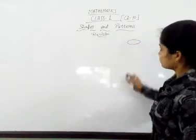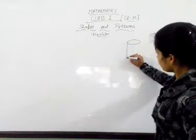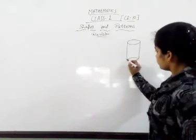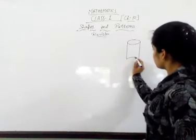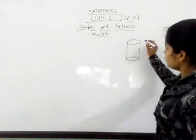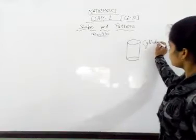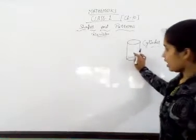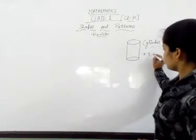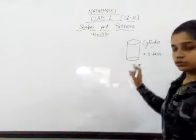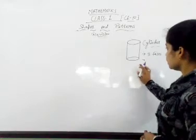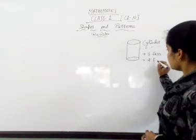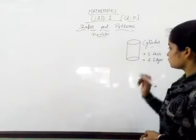This is the plane face. Here is the cylindrical pattern — it is a cylinder. The cylinder has two plane faces and one curved face, giving three faces in total, and two edges. Thank you.